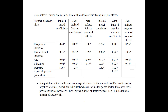On this slide I have the zero-inflated Poisson and negative binomial models — the coefficients and marginal effects. These three columns are for the Poisson-related models and these are for the negative binomial models. One thing that surprised me is that the coefficients in the inflated binary model — whether the outcome is zero or positive — are almost opposite in sign to what we had from the logit models before, and also of different magnitudes.